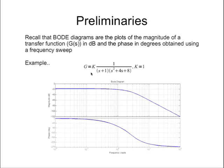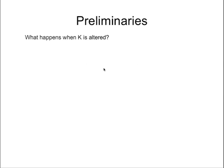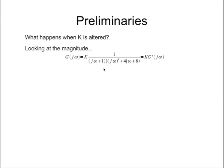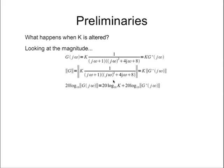Bode plots are usually done for k equal to 1. The transfer function evaluated at j omega can be written as k times G dash, where G dash is everything except k. Taking the magnitude in decibels, this ends up being a sum of the individual terms in decibels.